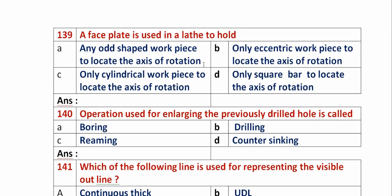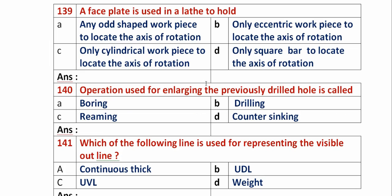Question 139: A face plate used in a lathe is used to hold? Option A: any odd-shaped workpiece to locate the axis of rotation. Option B: only eccentric workpiece. Option C: only cylindrical workpiece. Option D: only square bar. A face plate is used in a lathe to hold any odd-shaped workpiece to locate the axis of rotation. So option A is the right answer.